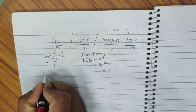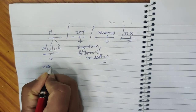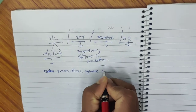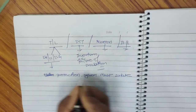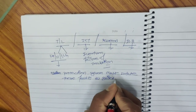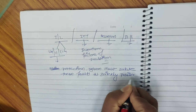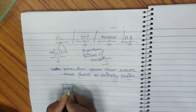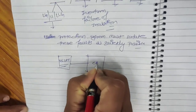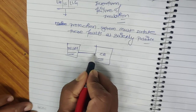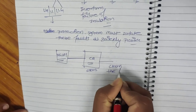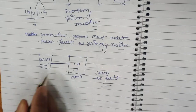We cannot overrule the chances of fault. But the main purpose of the protection system is to isolate this fault as quickly as possible. To isolate the fault quickly, the first thing we need is a protective relay. The protective relay, after detecting the fault, sends signals to the circuit breaker. The circuit breaker, after receiving this signal, opens and clears the fault. This is the basic philosophy inside every protective scheme.